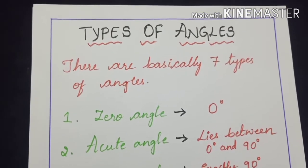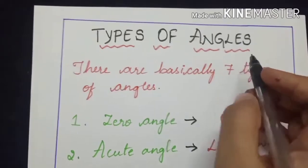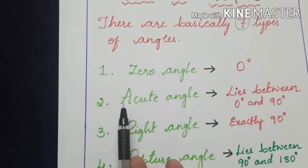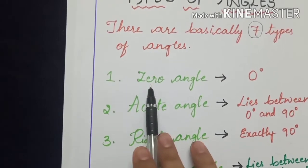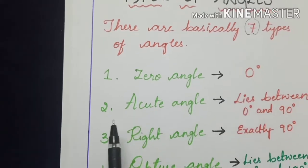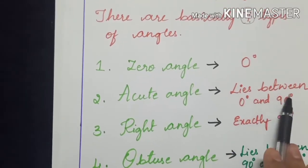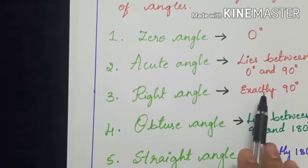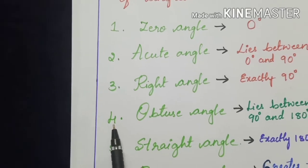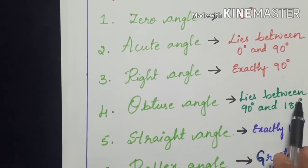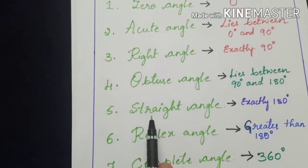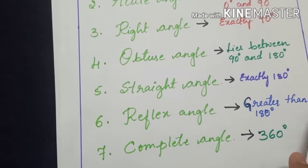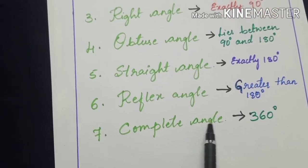Now let us recall the definition of all the types of angles. There are basically seven types of angles. The first one is the zero angle, which measures zero degrees. The second one is the acute angle, which lies between zero degrees and ninety degrees. The third one is the right angle, which measures exactly ninety degrees. The fourth one is the obtuse angle, whose measure lies between ninety degrees and one hundred eighty degrees. The straight angle measures exactly one hundred eighty degrees. The reflex angle measures greater than one hundred eighty degrees. And the last one is the complete angle, which is three hundred sixty degrees.